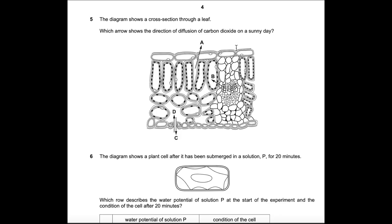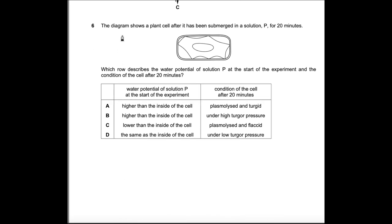Question 5: The diagram shows a cross section through a leaf. Which arrow shows the direction of diffusion of carbon dioxide on a sunny day? During sunny conditions, photosynthesis exceeds respiration and requires carbon dioxide as a raw material, along with water. We choose the arrow showing carbon dioxide entering the leaf. We can't choose C because that shows something leaving the cell — that would be oxygen, a waste product of photosynthesis. The answer is D.